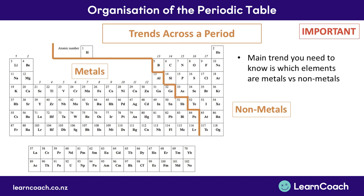First of all let's consider the trends that exist across a period. The main trend you need to know for your exams is the difference between which elements are metals and which are non-metals. Although this division can vary between different sources, the dividing line is along the orange line marked on the periodic table. Elements to the left of this orange border are considered to be metals, and those to the right are considered to be non-metals.